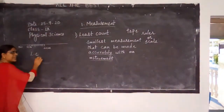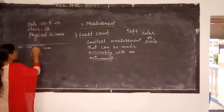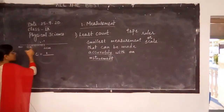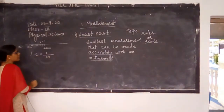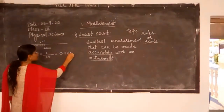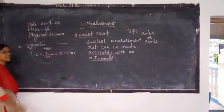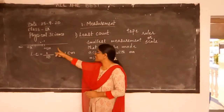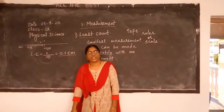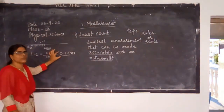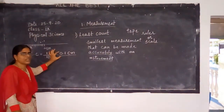Here, my instrument is my scale. I need to find out the least count of the scale. To find the least count, look at 1 cm and 2 cm on your scale. In between 1 cm and 2 cm, how many lines are there? There will be 10 lines.